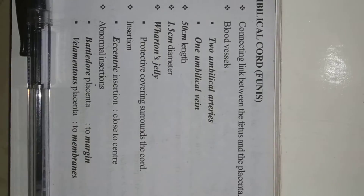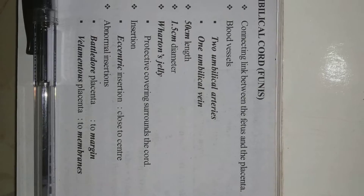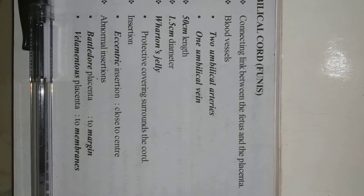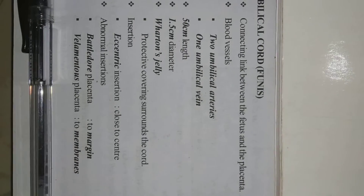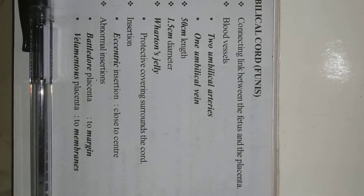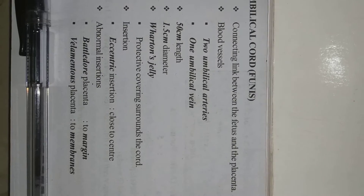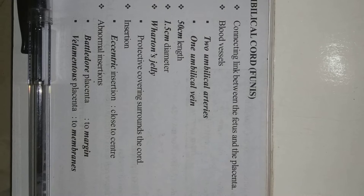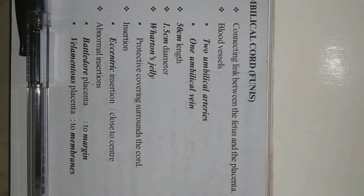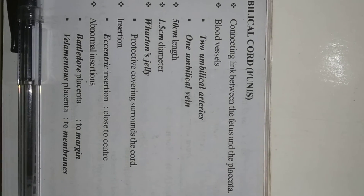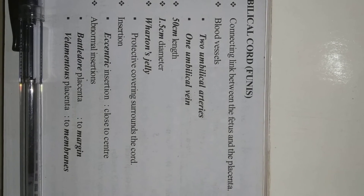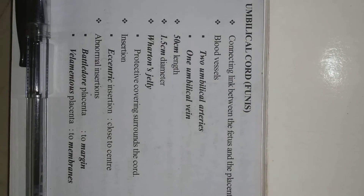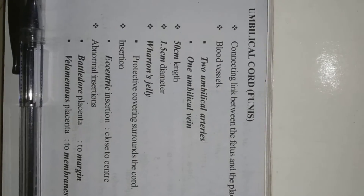Wharton's jelly is the protective covering surrounding the umbilical cord. This is an important topic with more exam questions. Next: insertions. Eccentric insertion is close to center. Abnormal insertions include battledore placenta — to the margins — and velamentous placenta — to the membranes. These are all things covered under the umbilical cord or funicle.